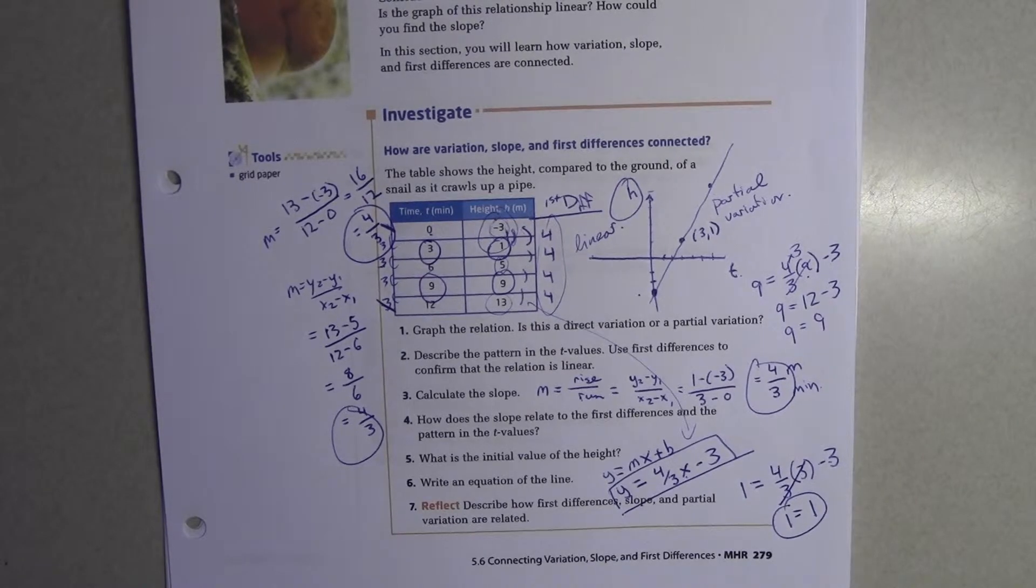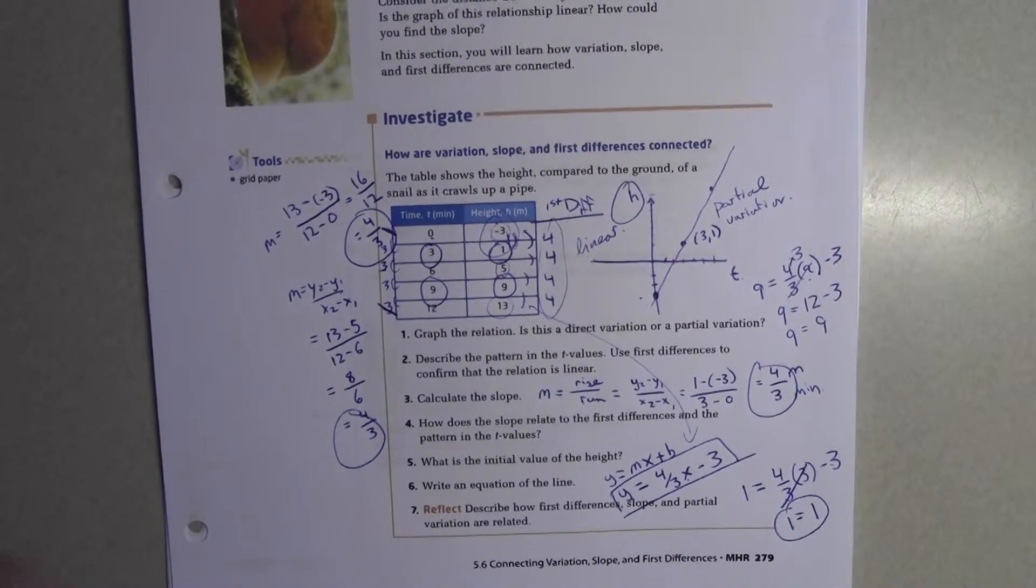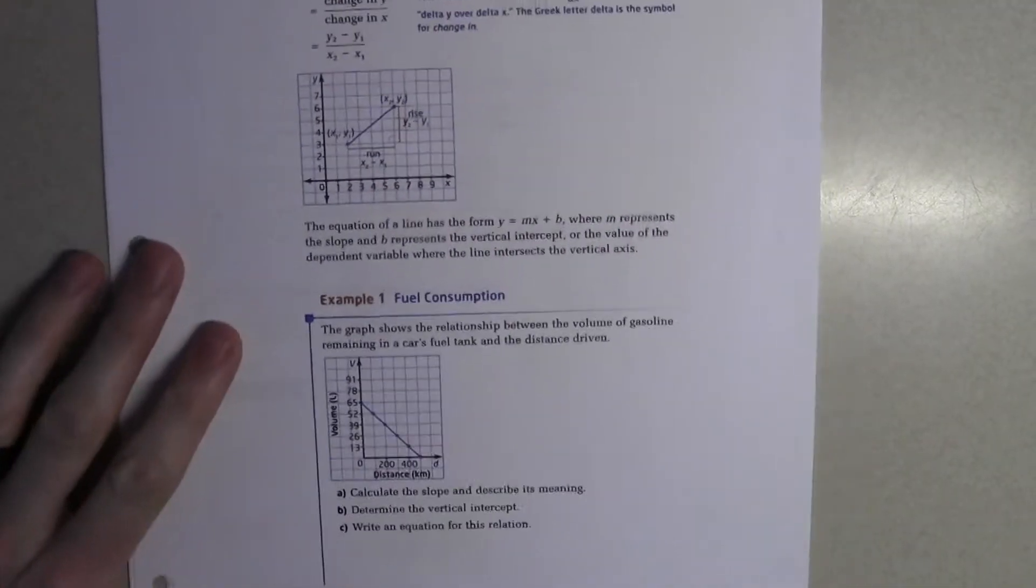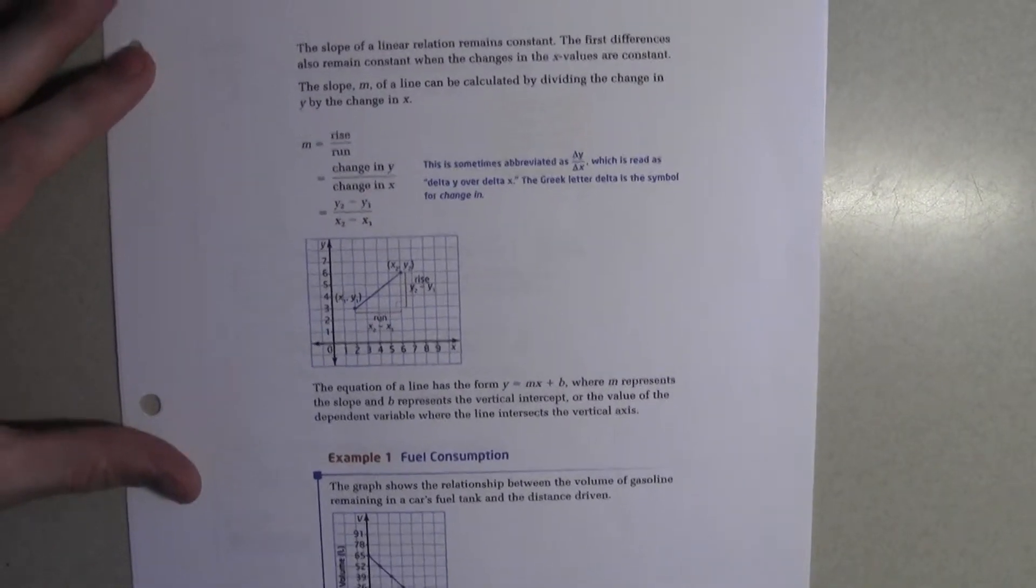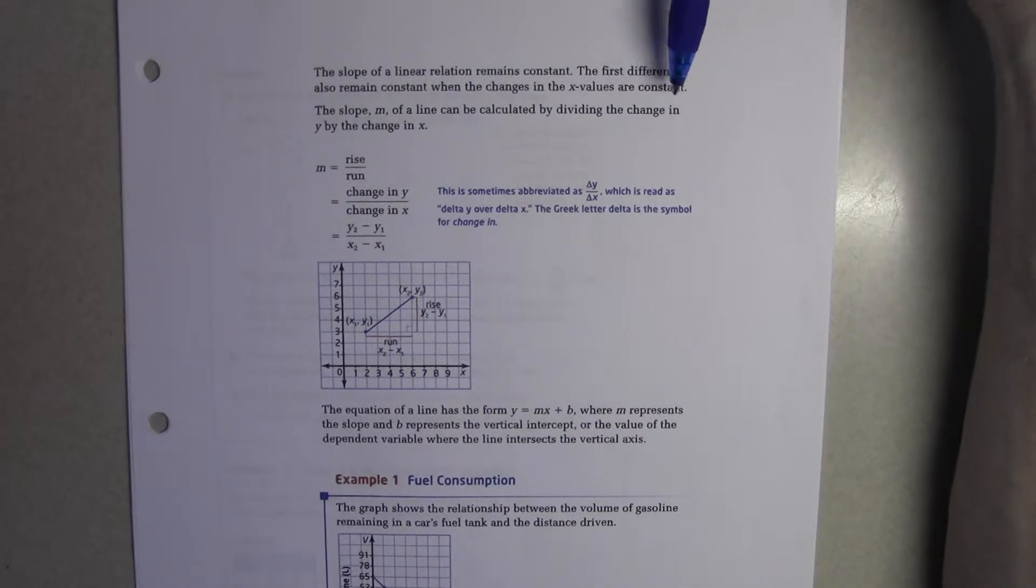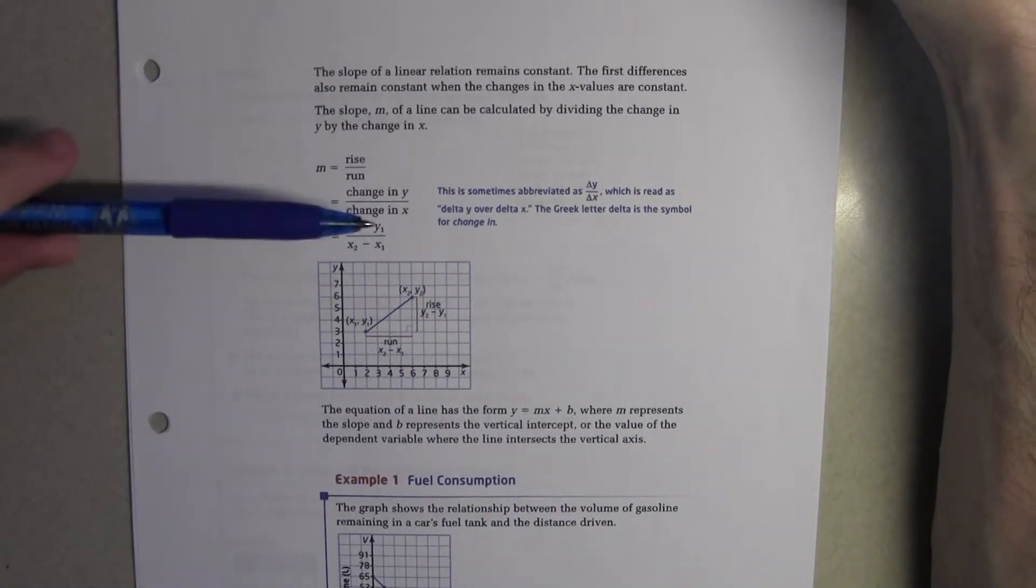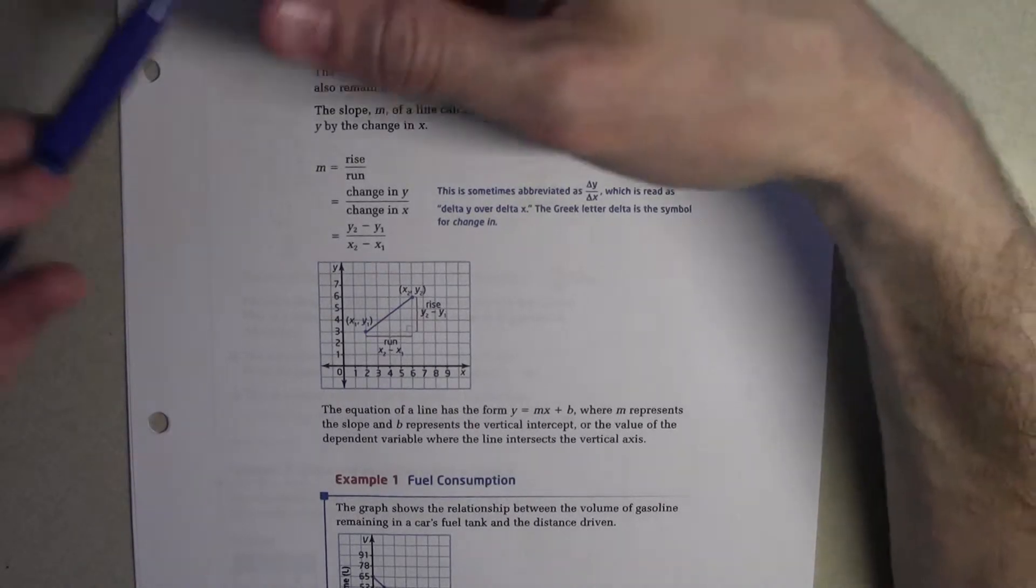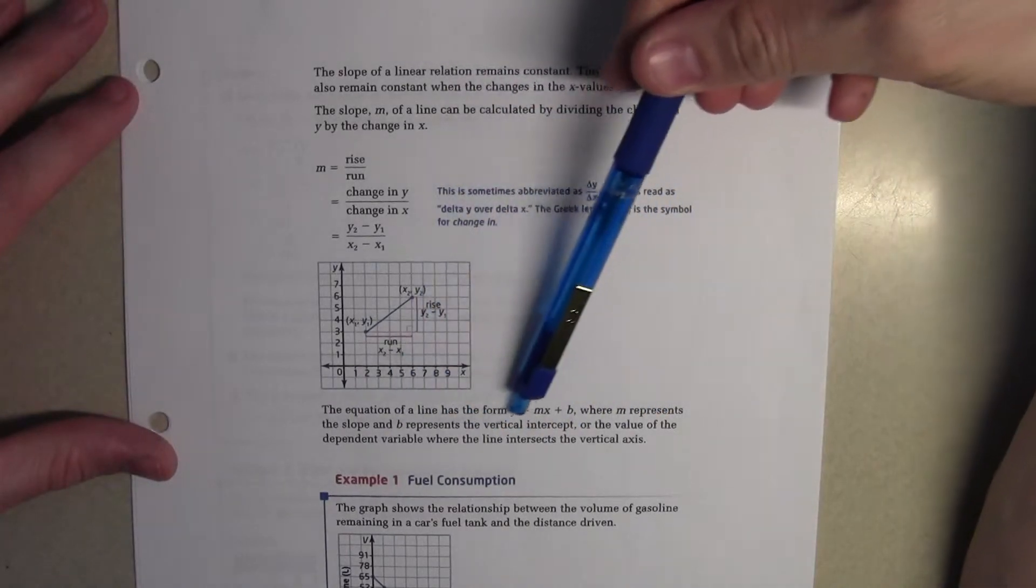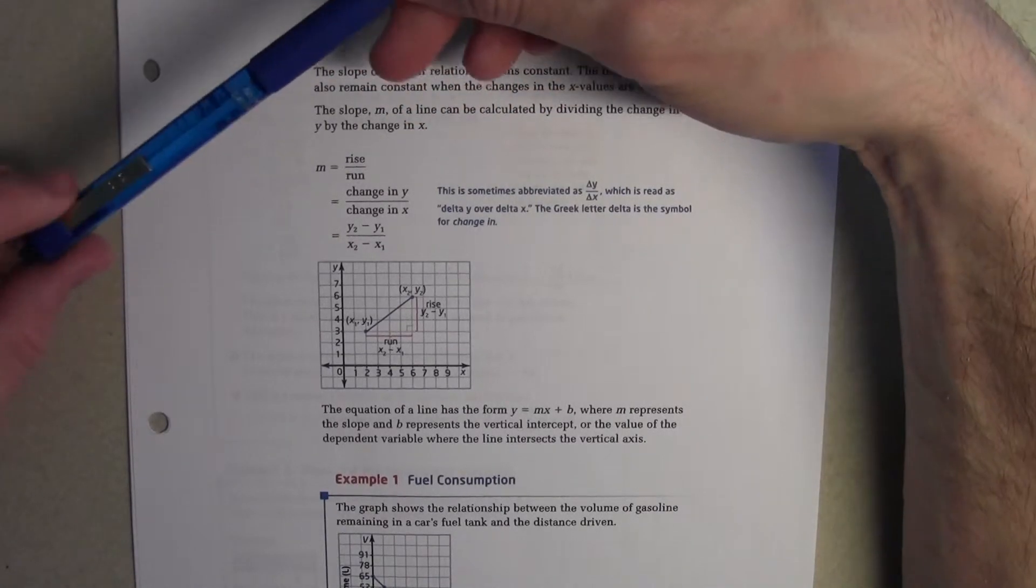Christian? Um, this is kind of going back a few lessons, but in the equations, let's just say, like, a distance time graph, so y equals k to x, and the constant represents the slope. Yeah. And because it's a distance time graph, you go to the constant and have almost speed. Yes. Okay. Any other questions? All right. Moving right along. The slope of a linear relation remains constant. That's what we talked about. We said if it's a straight line, the slope is the same anywhere. The first difference is also remain constant when the changes in the x values are constant. So, we looked at that now for two days. The slope, m of a line, can be calculated by dividing the change in y by the change in x. So, we've looked at this in length, right? The equation of a line has the form y equals mx plus b, where m is the slope and b represents the vertical intercept, the y intercept. Or the value of the dependent variable where the line intersects the vertical axis. Same thing. It's just a longer way of saying it.